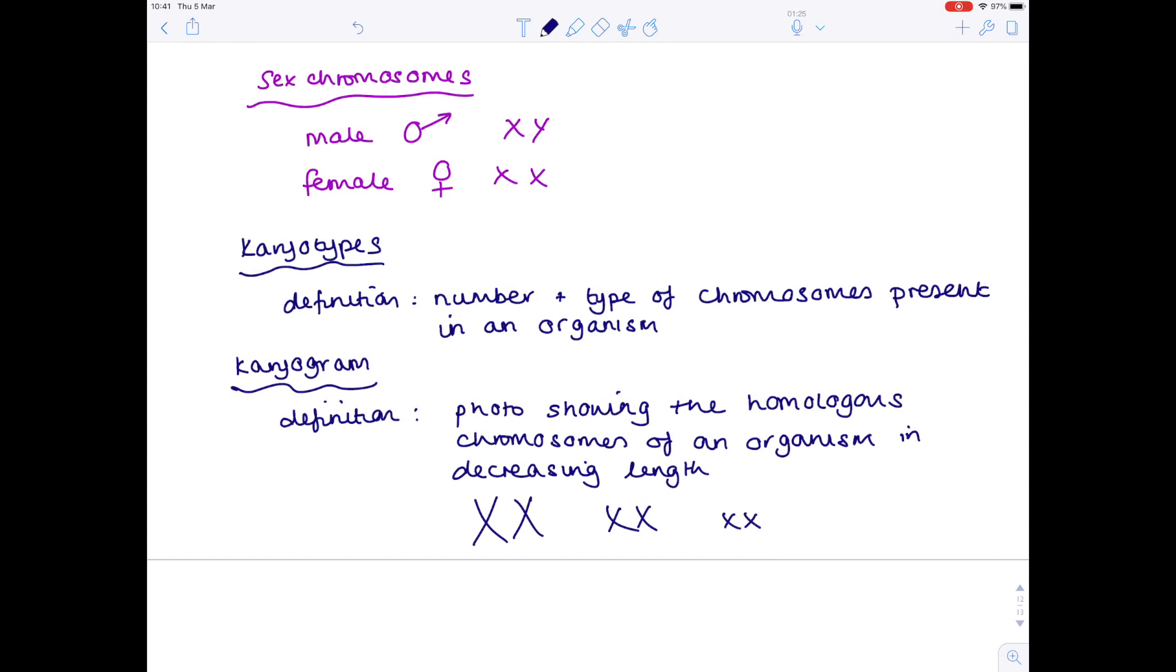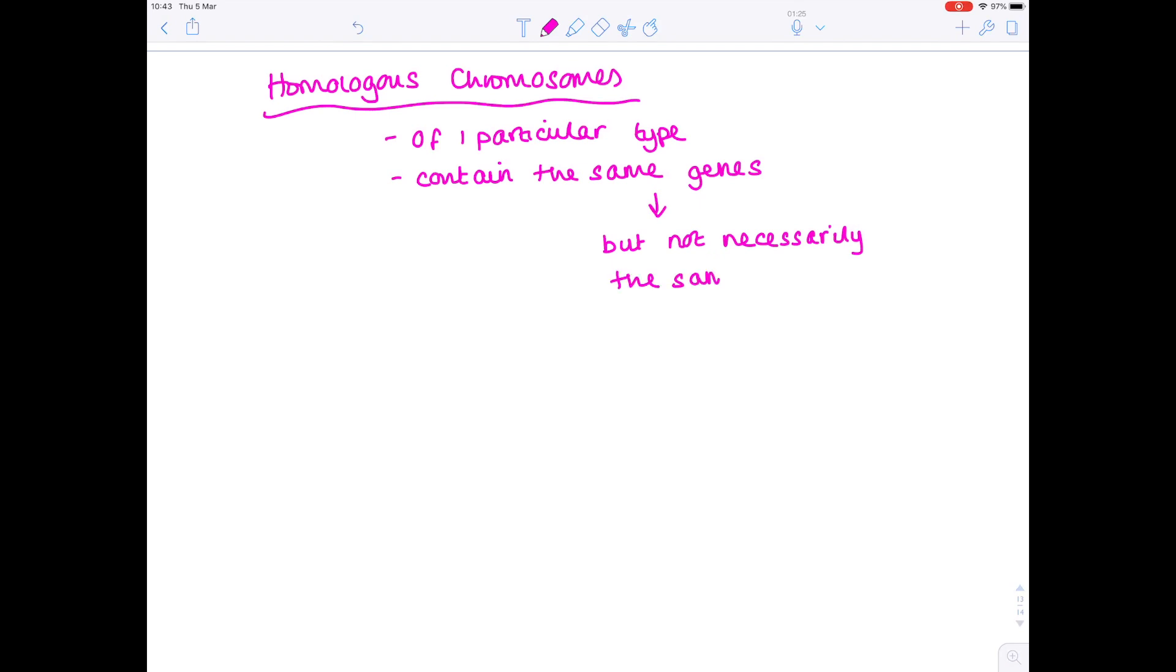What does the term homologous chromosomes mean? Homologous chromosomes just refers to the fact that the chromosomes are of one particular type, which means they contain the same genes. But remember, genes come in lots of different forms. These are known as alleles, and in homologous chromosomes, there's no guarantee that these alleles will all be the same. So they don't necessarily contain the same alleles.